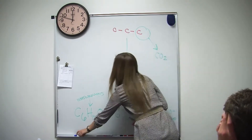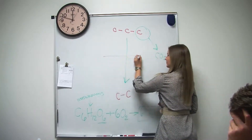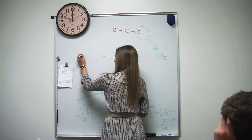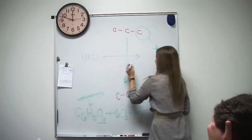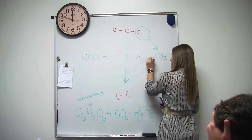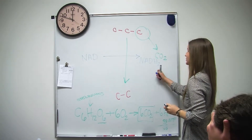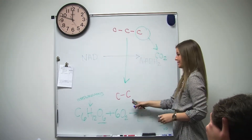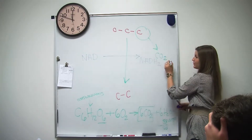We're going to have one more step though. We input NAD, and what does that give us? NADH. So when we do this, we're going to go from 3 carbons to 2 carbons. That one carbon is going to go off to form CO2.